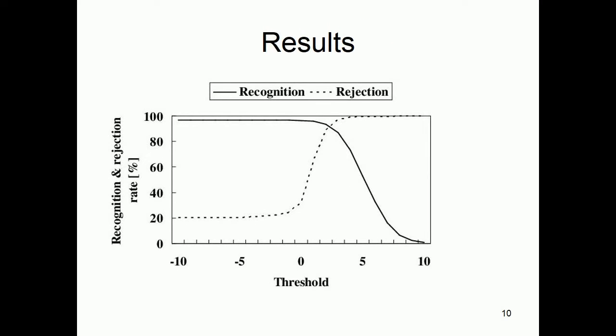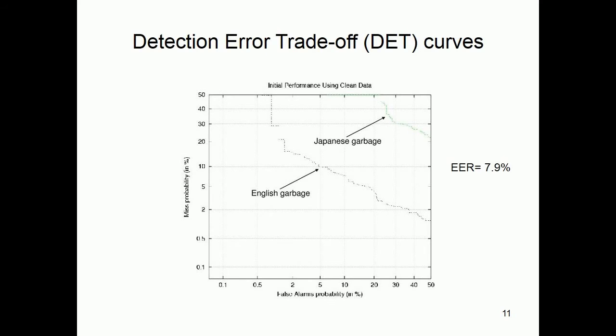Results are presented using Detection Error Trade-Off, or DET, curves. The Equal Error Rate achieved is 7.9%.